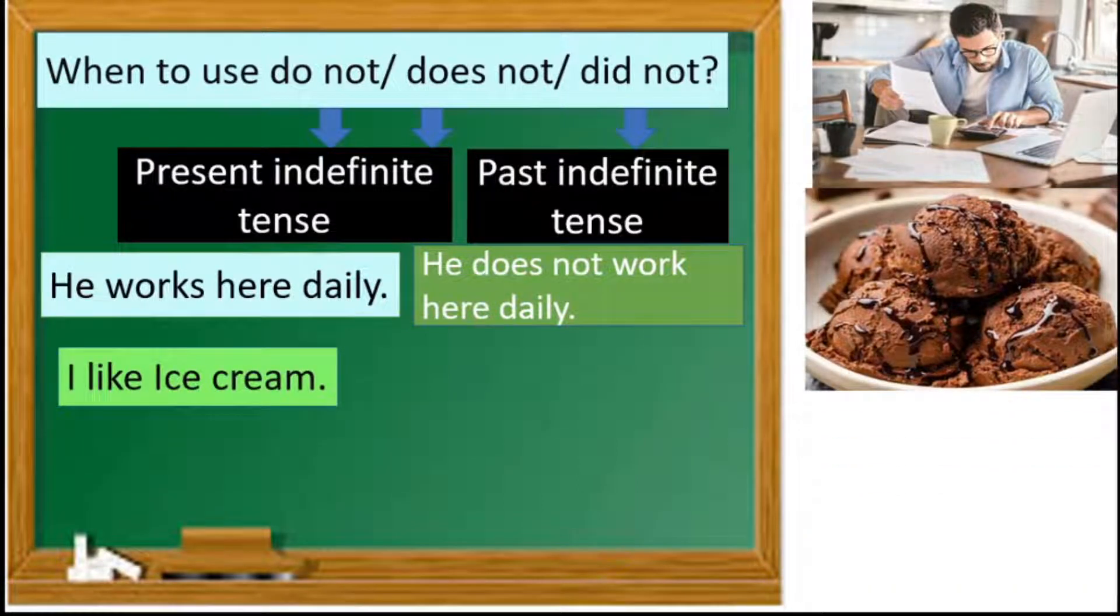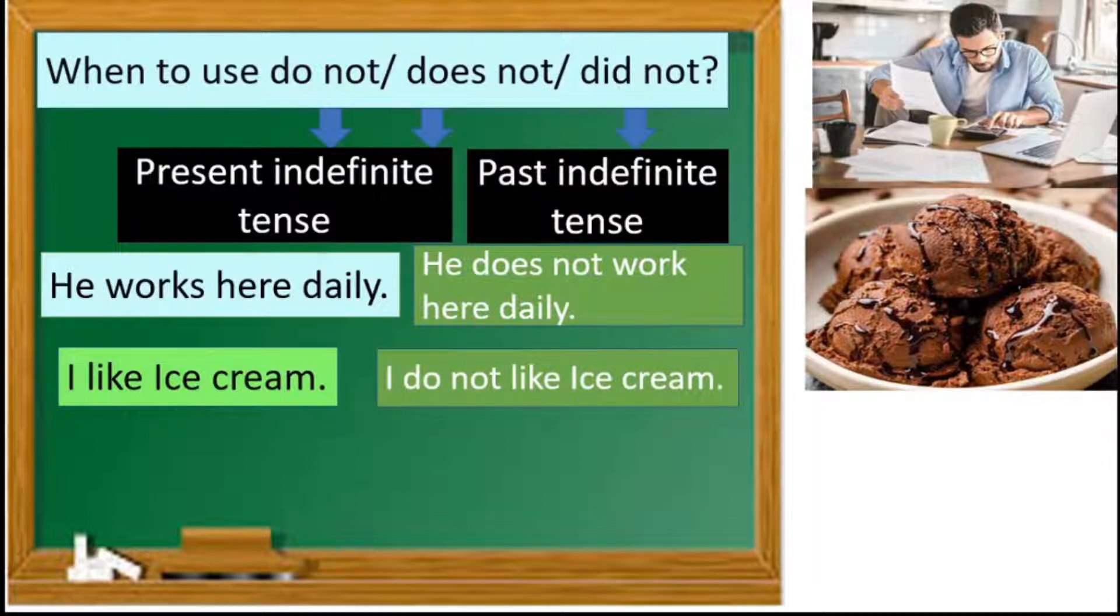Second example, I like ice cream. I do not like ice cream. Children, you can see this is also in present indefinite tense, so we use do not.